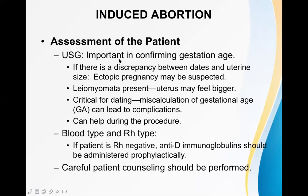Ultrasonography is important in confirming the gestational age. Gestational age can be estimated by history taking — asking about the LMP (last menstrual period). Sometimes the lady forgets her LMP, so ultrasonography is needed. If there is a discrepancy between the date and uterine size, ultrasonography is very helpful, and ectopic pregnancy may be suspected.